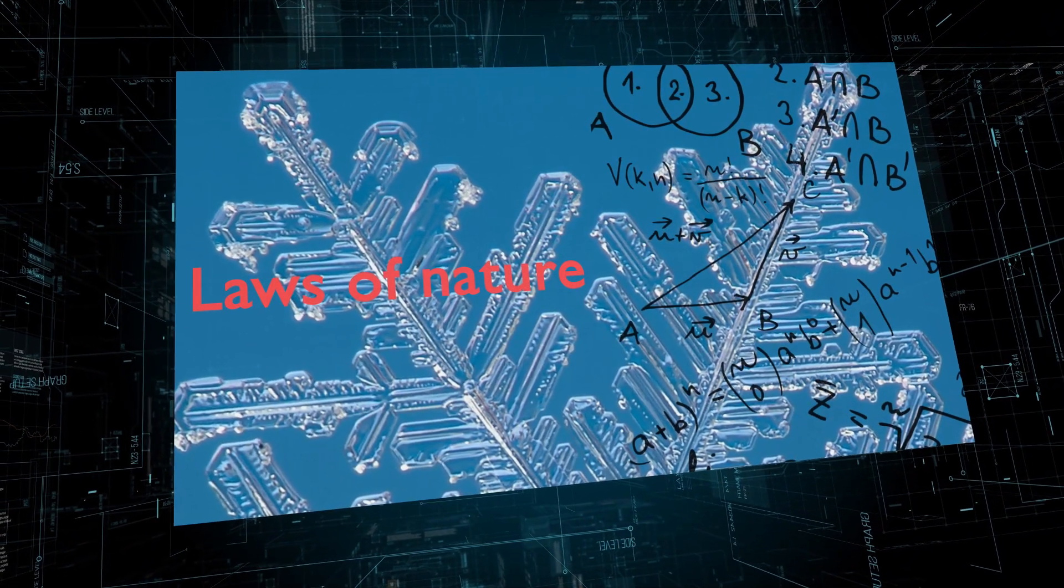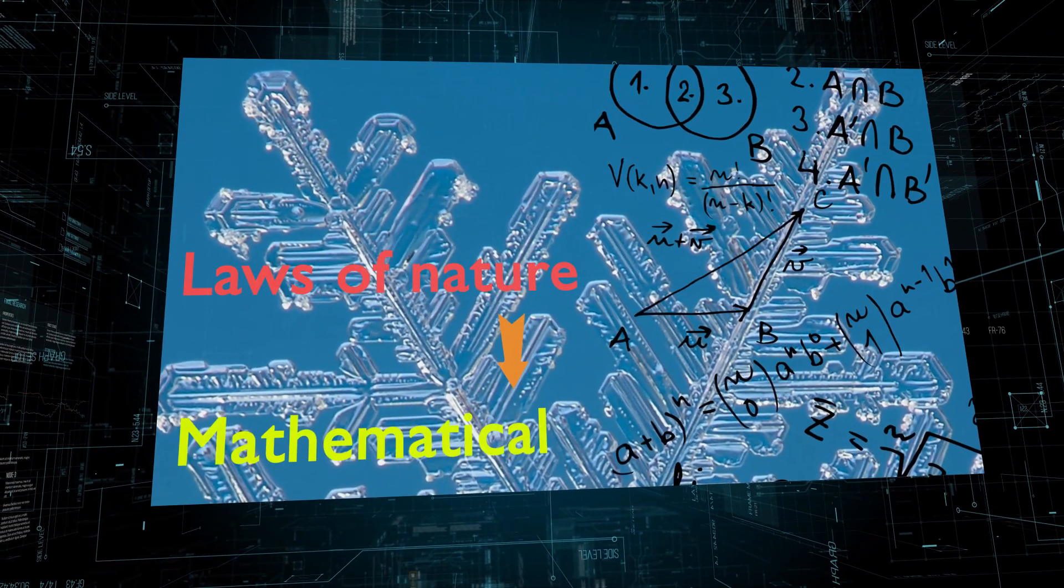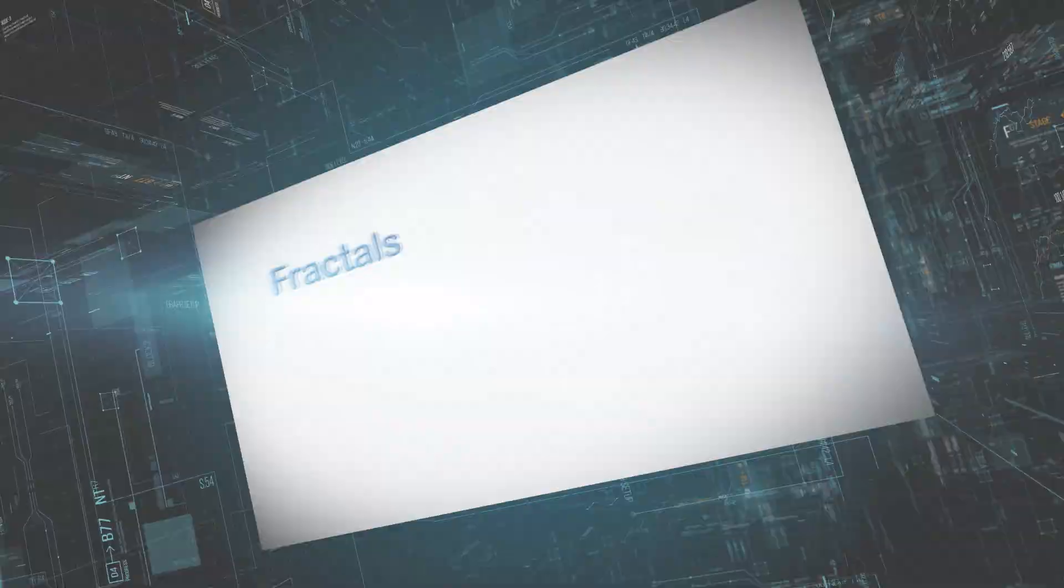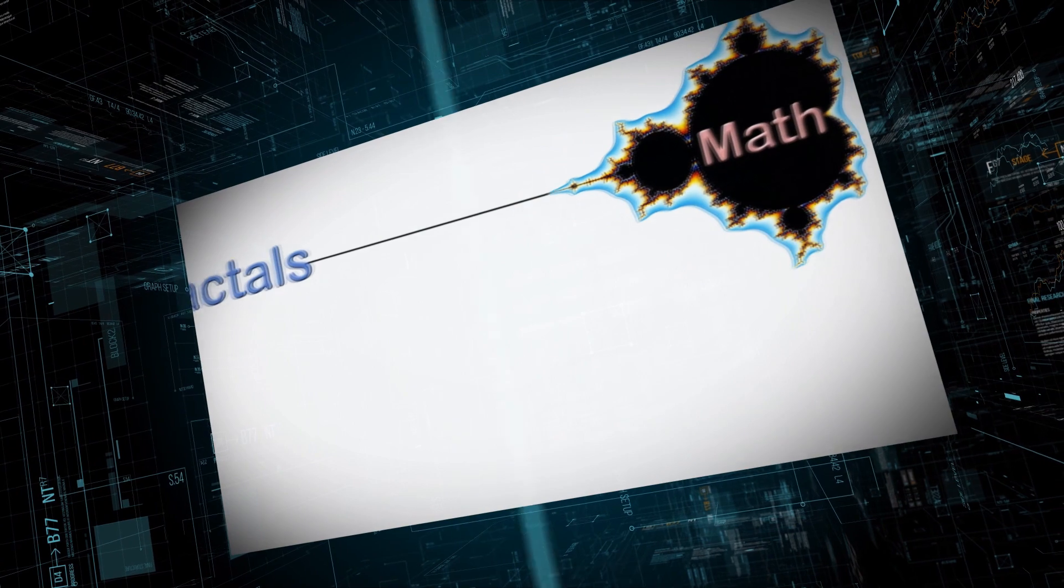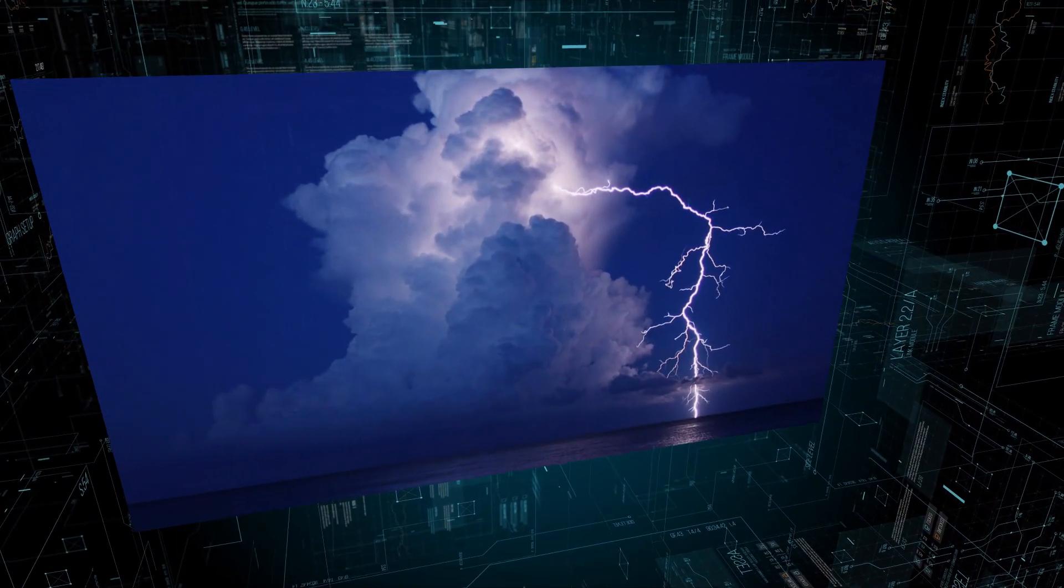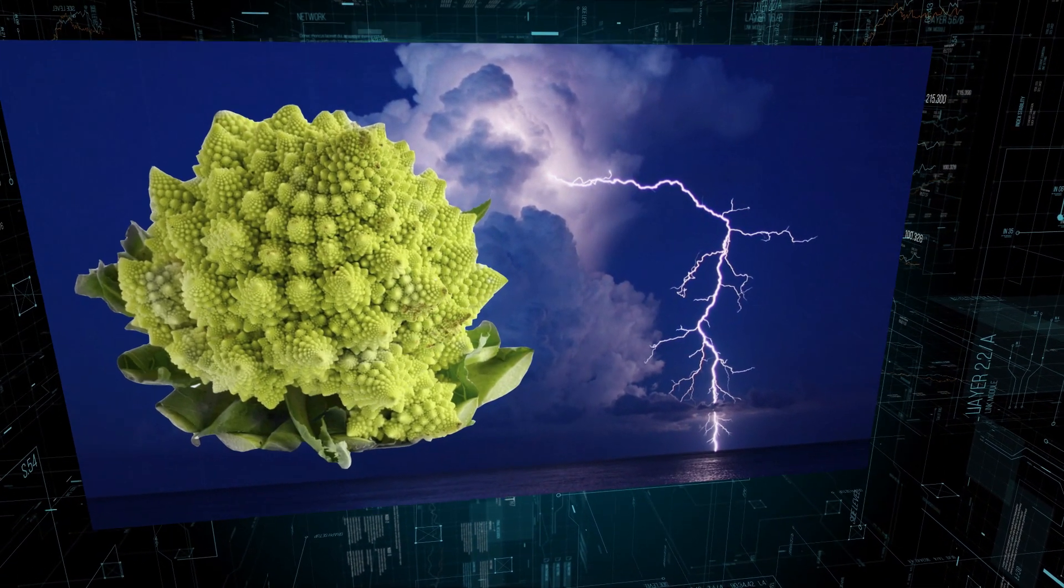The laws of nature responsible for snowflake formation are mathematical, because they stem from the mind of God. Fractals occur both in abstract math and in the physical world, because they have the same designer. Lightning branches occur in fractal patterns, and so does broccoli.